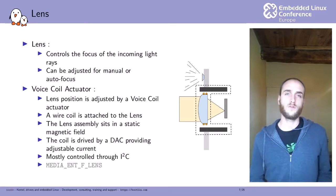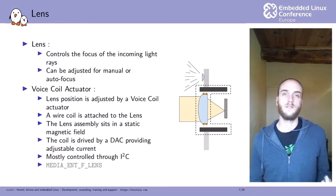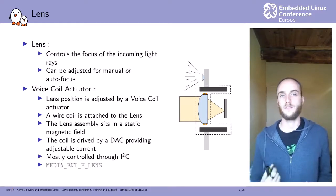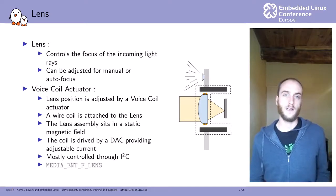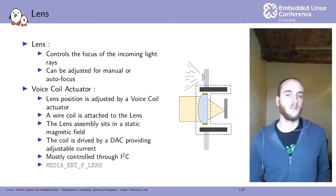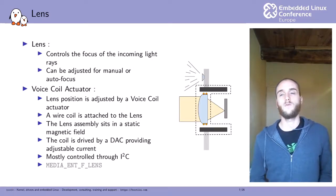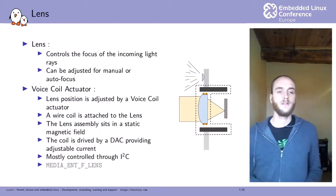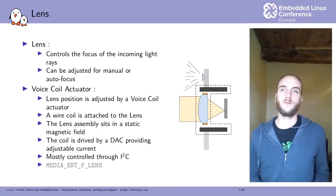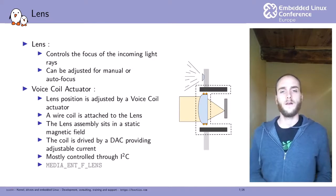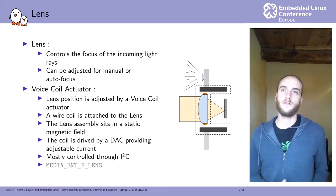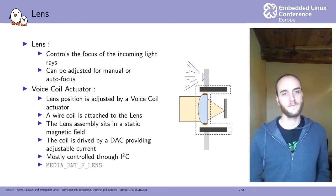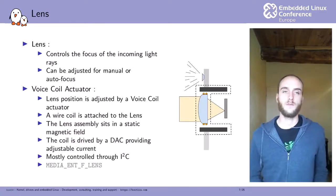Controlling the lens position means controlling the intensity of the current through the coil. This is done through dedicated chips or a simple digital-to-analog converter with analog circuitry. When implementing drivers for that, you have proper support with the media controller API, and all existing lens voice coil drivers supported in Linux are driven through I2C, making it simple to integrate into the system.